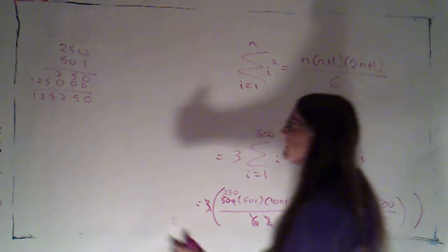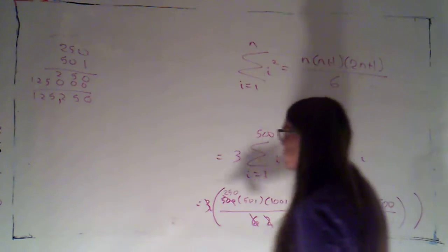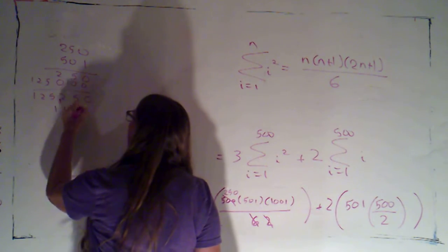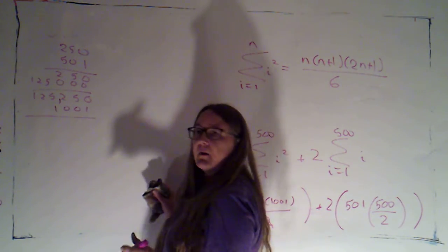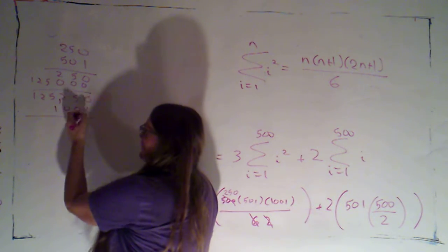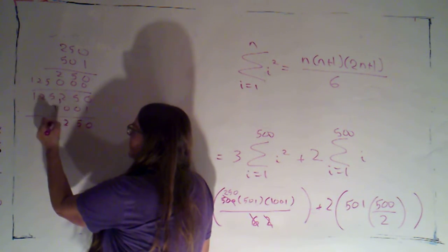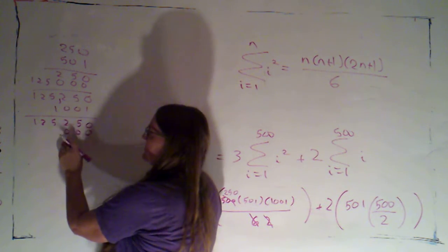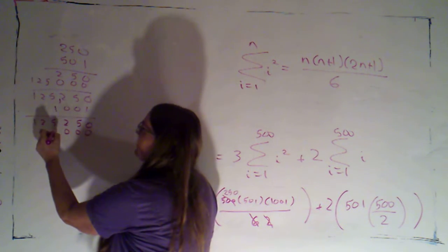Okay. So two hundred and fifty times five hundred and one is a hundred and twenty five thousand two hundred fifty. I get to multiply that by a thousand and one. Okay. Well that's just keeping track of place values. So when I multiply by one I just get these same digits.